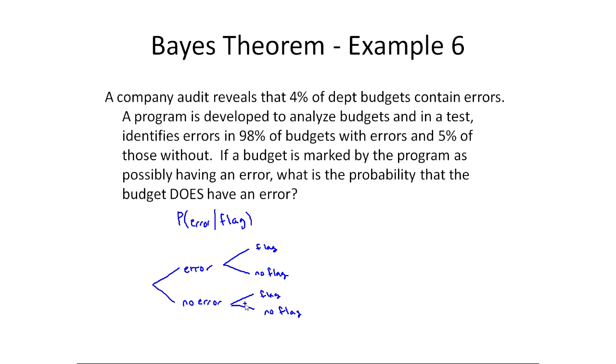Now I'm going to fill out the probabilities on here. So the probability of an error, we're going to base it off of the audit and say, well, 4% have an error. So there's a strong chance it doesn't have an error. So that's 0.96. If it has an error, so now these are conditional.